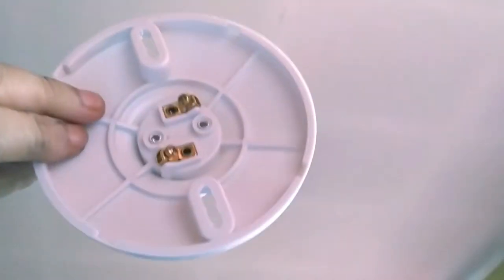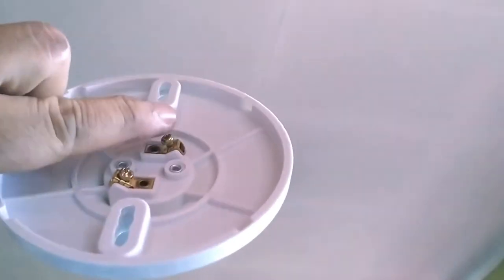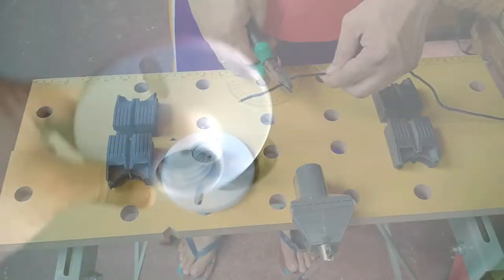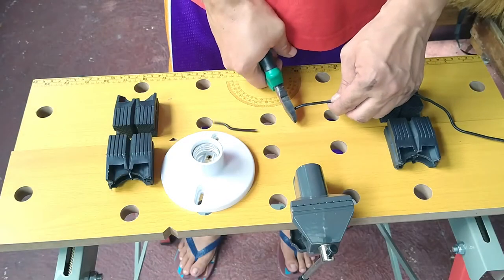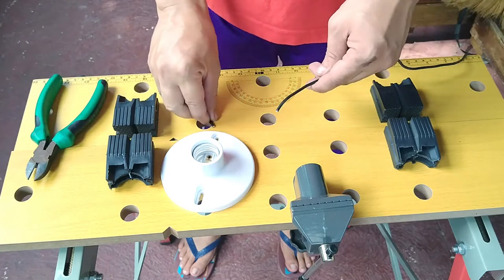Now, we need to prep this E27 bulb socket to mount on that ceiling. To do that, we cut two pieces of solid electrical wires about three inches long.